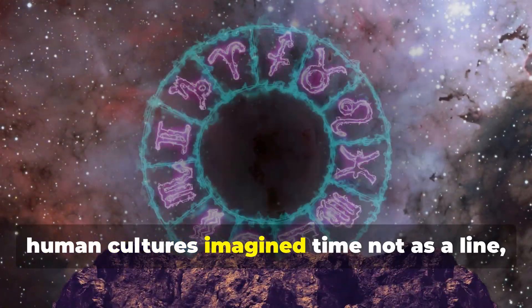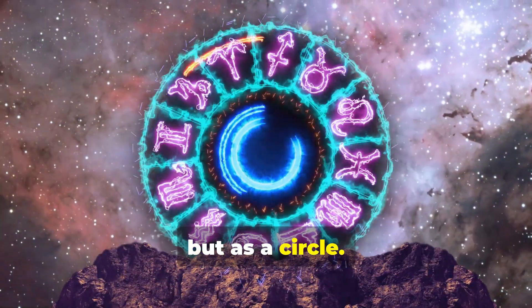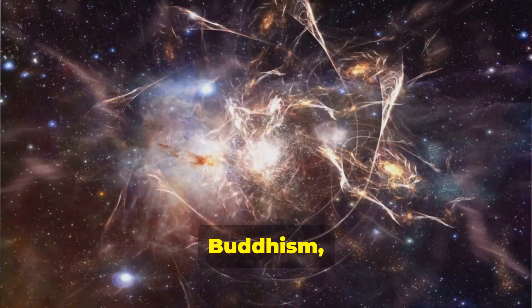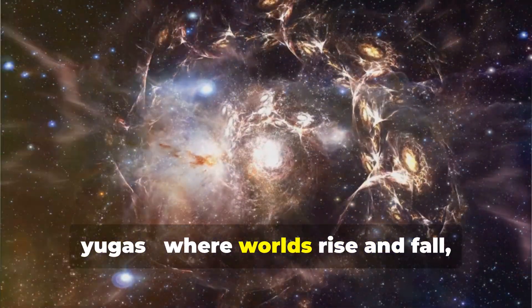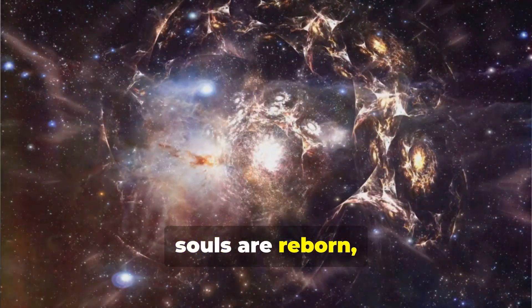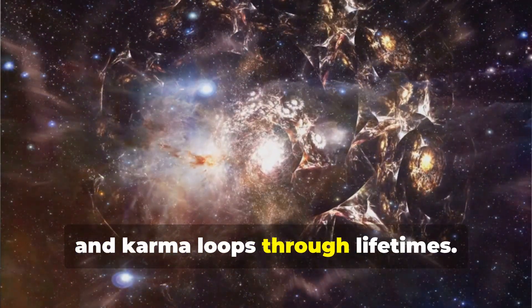Long before physics, human cultures imagined time not as a line but as a circle. In Hinduism, Buddhism, and Jainism, time unfolds in great cycles—kalpas and yugas—where worlds rise and fall, souls are reborn, and karma loops through lifetimes.